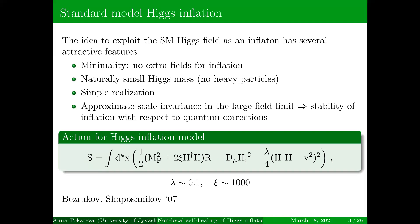The realization of Higgs inflation looks quite simple — it's just one term in the Lagrangian. Also, it has approximate scale invariance in the large field limit, and this provides the stability of inflation with respect to quantum corrections during inflation, during the stage of inflation for large field values.